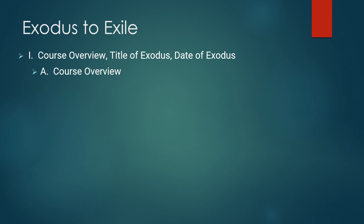Until they returned from the exile about 500 BC. So this long period moves from the Exodus and the formation of God's people as a nation at Mount Sinai through Joshua, Judges, Samuel, Kings into the exile and return in Ezra and Nehemiah. The focus of classroom discussion will be on the narrative material of the Pentateuch and the books of Joshua, Judges, and Samuel.